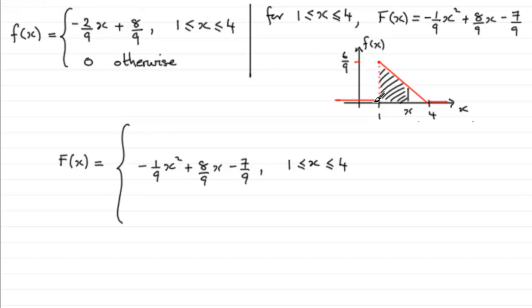When x is less than one, the probability of getting any value up to one is going to be zero, because the only values we can get are between one and four. So this is going to be zero when x is less than one.